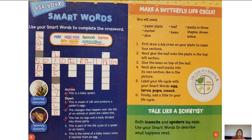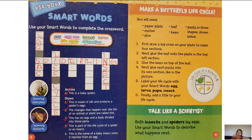Number 3 going down: this has 6 legs and a body divided into 3 parts — that is an insect. I-N-S-E-C-T. Number 5 going down: this is part of the life cycle of a spider or an insect — that is egg. E-G-G. Remember the adult lays the eggs.